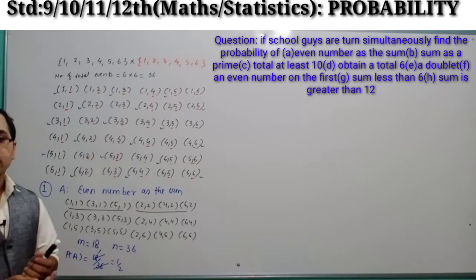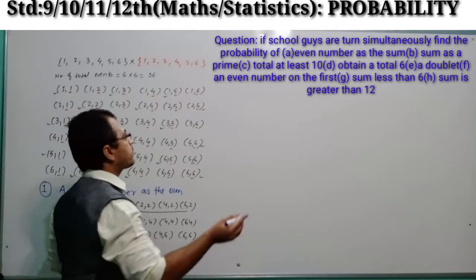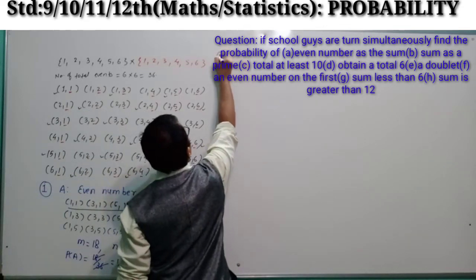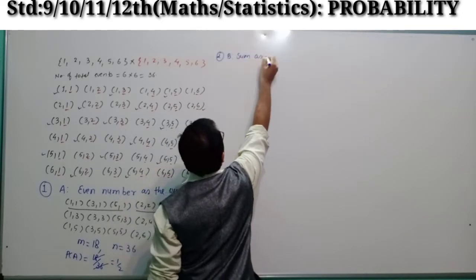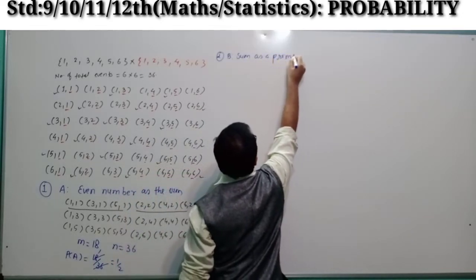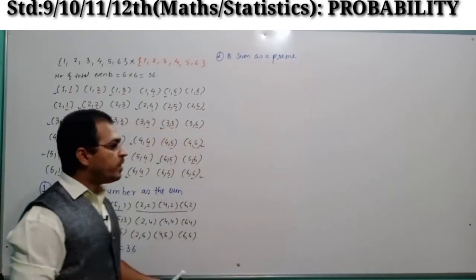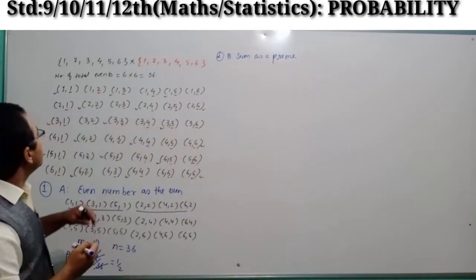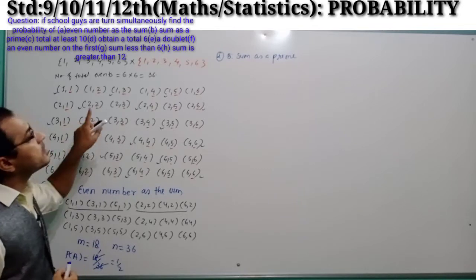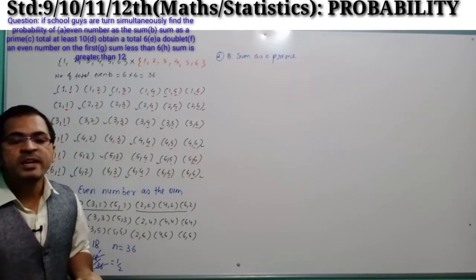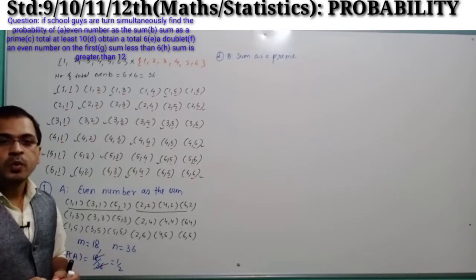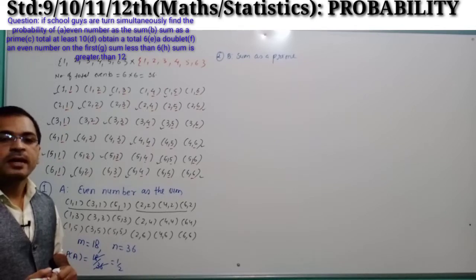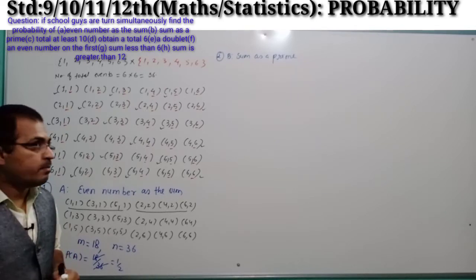Now moving to the second question. Event B: sum as a prime number. You will have to add the digits on both dice and the sum should be prime. The prime numbers are 2, 3, 5, 7, and 11.